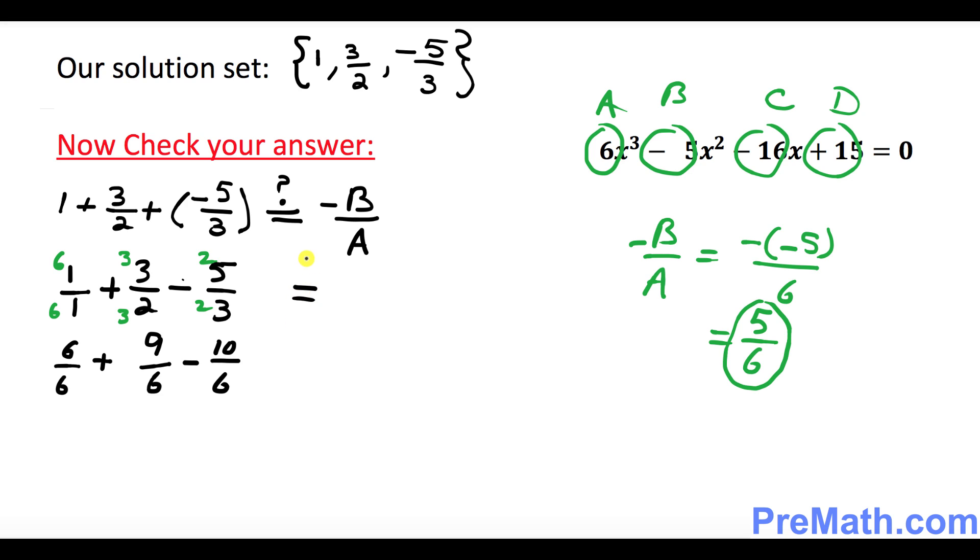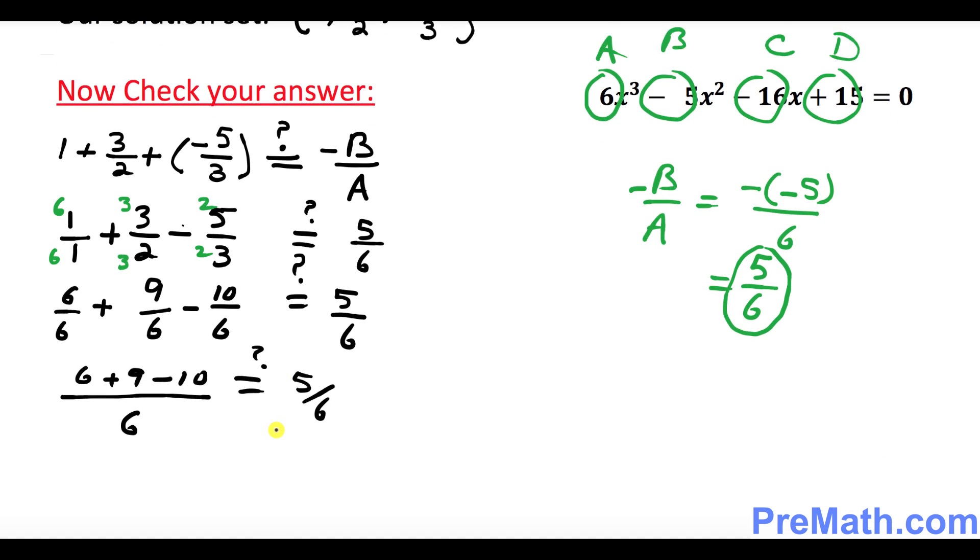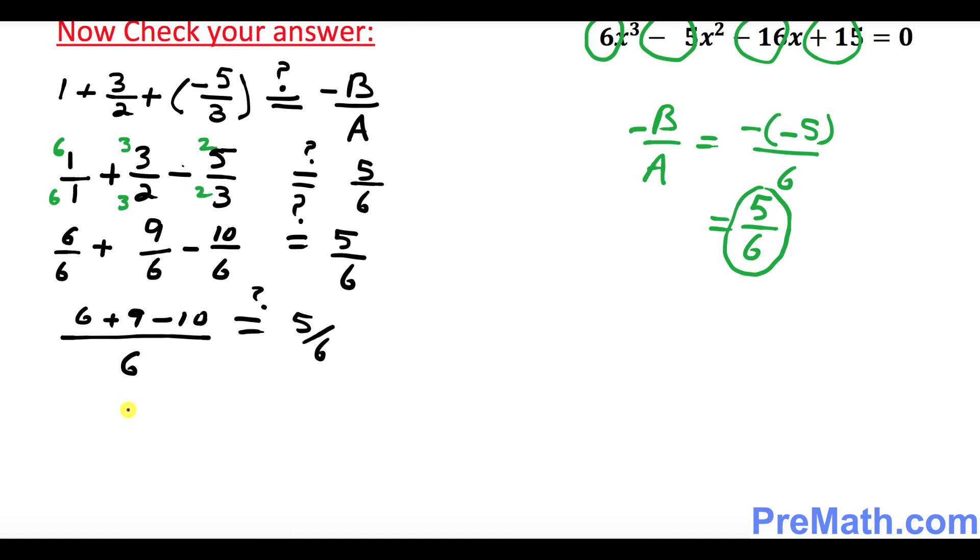And we know that minus B over A is 5 over 6. Right now, our common denominator is 6. You just put it once. So you put down 6 plus 9 minus 10, is that equal to 5 over 6? On the top, that turns out to be 5 over 6. Is it equal to 5 over 6? Yes, both sides are equal. That means we checked our answer.